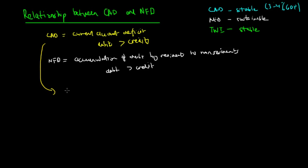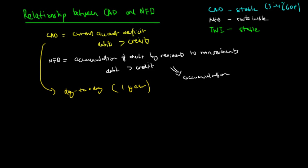The CAD is recorded on the current account on a day-to-day basis, with a balance over a period of around one year — typically one financial year. The net foreign debt, however, is an accumulation over many years — it has a period of X years — accumulated from nearly the beginning of when we started trading with these countries.